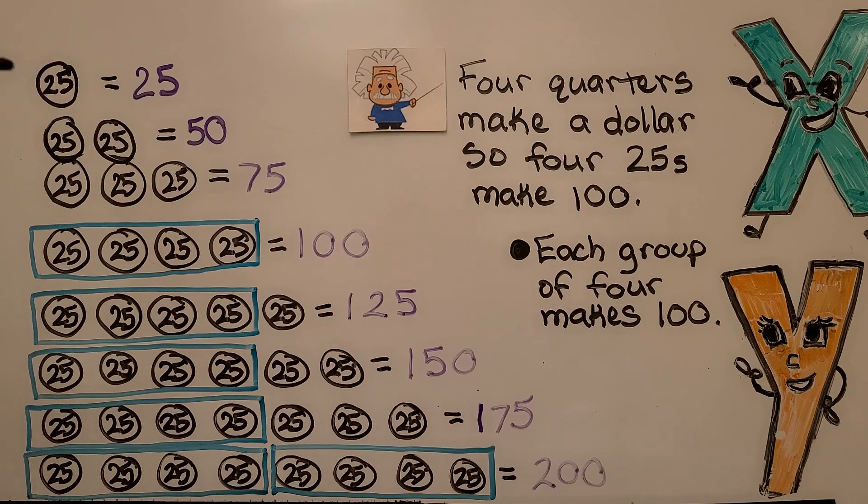You can see how I've drawn these. Four quarters make a dollar. So four 25's make 100. Each group of four makes 100. So if we have eight of them, we'd have 200.